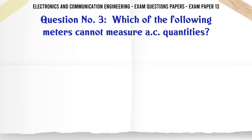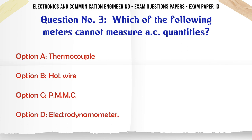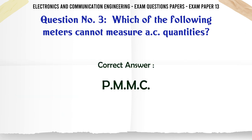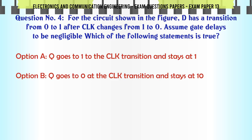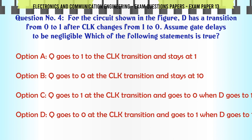Which of the following meters cannot measure AC quantities? A: Thermocouple, B: Hotwire, C: PMMC, D: Electrodynamometer. The correct answer is PMMC.